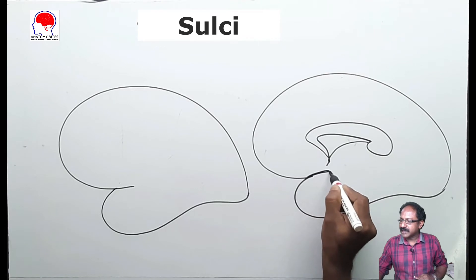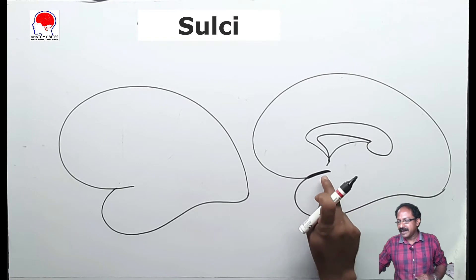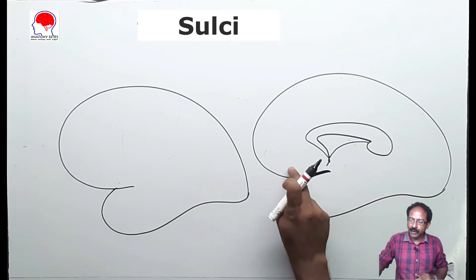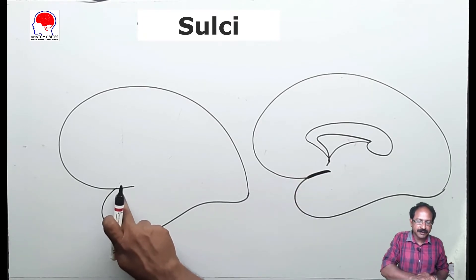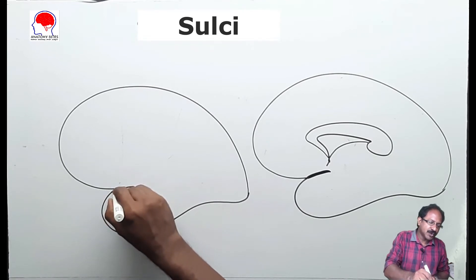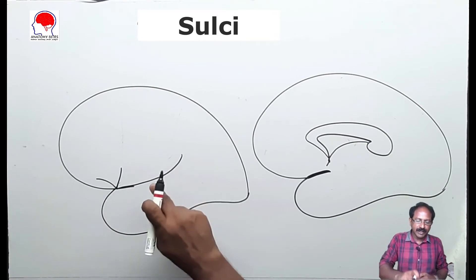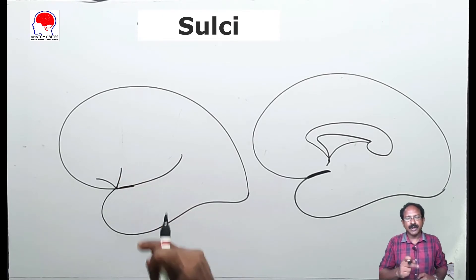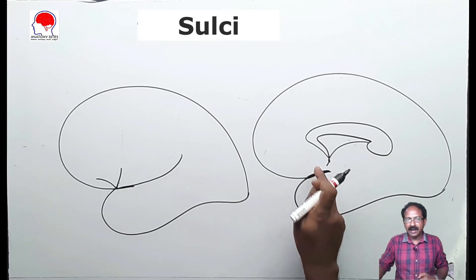The lateral sulcus is a very deep sulcus which begins in the medial aspect. It has a stem, and this lateral sulcus runs in between the frontal lobe and the temporal lobe. On reaching the superlateral surface, this lateral sulcus divides into three rami: one anterior ramus, ascending ramus, and a posterior ramus. The posterior ramus divides mainly the frontal lobe and the temporal lobe, and in the medial aspect it separates the frontal and the temporal lobe.